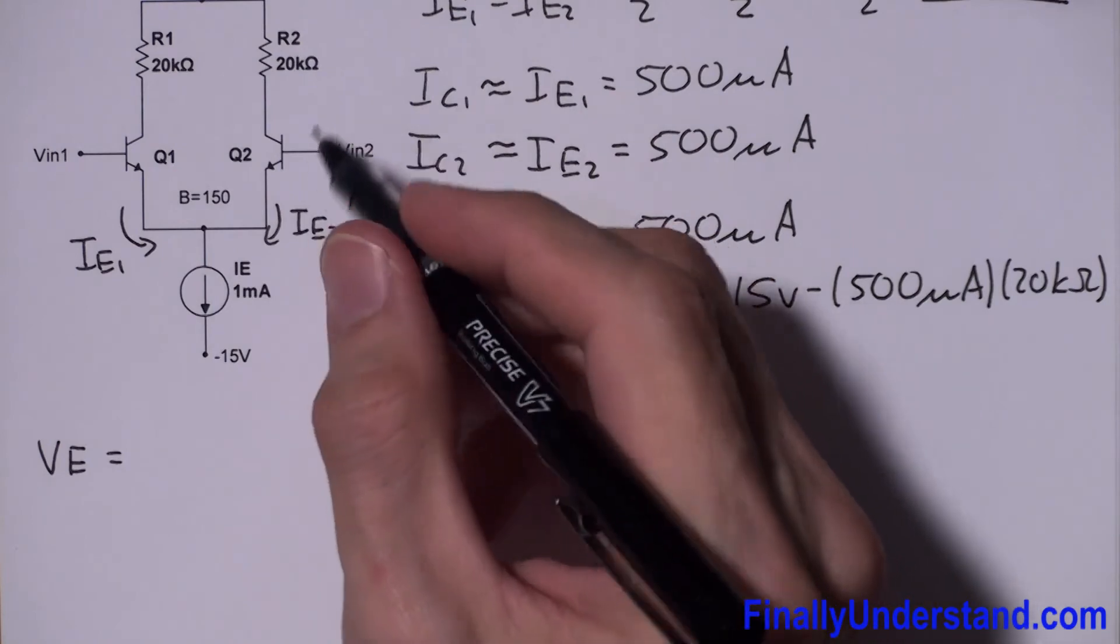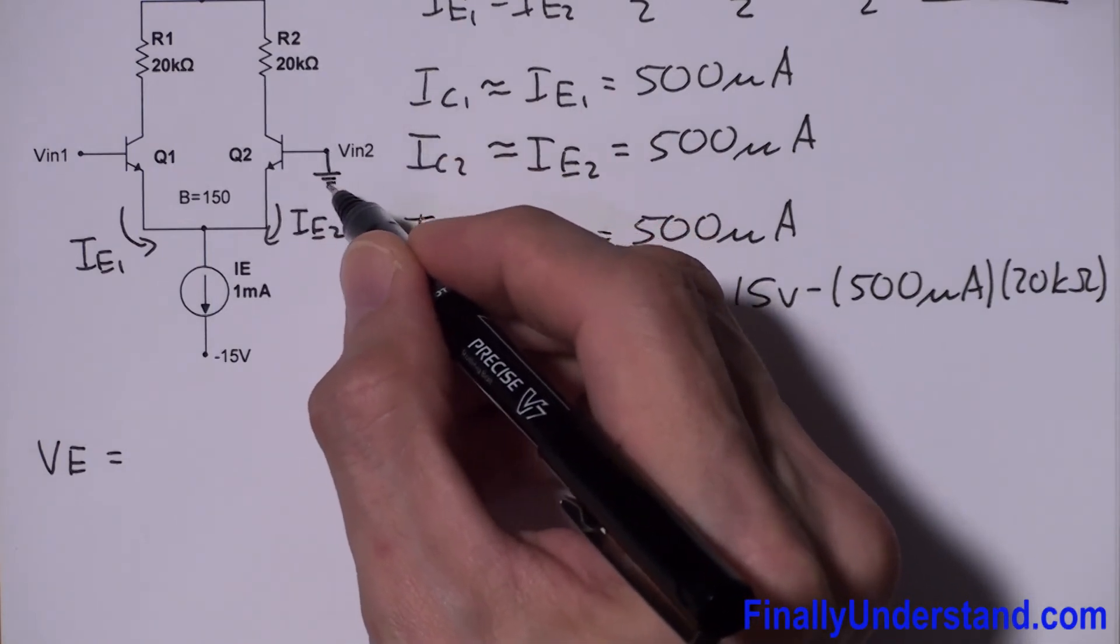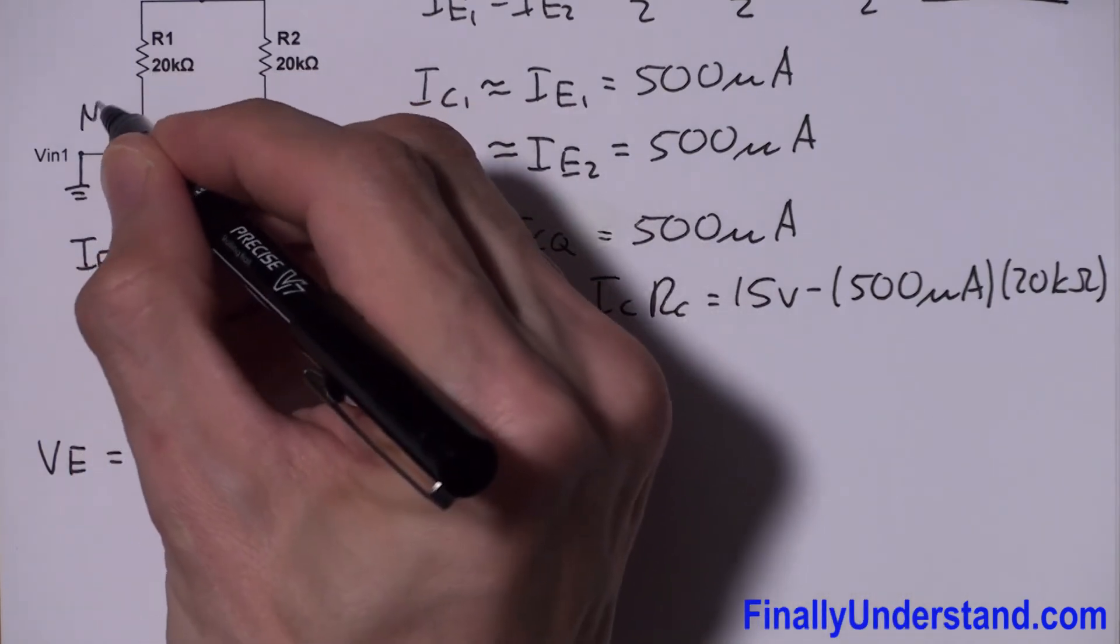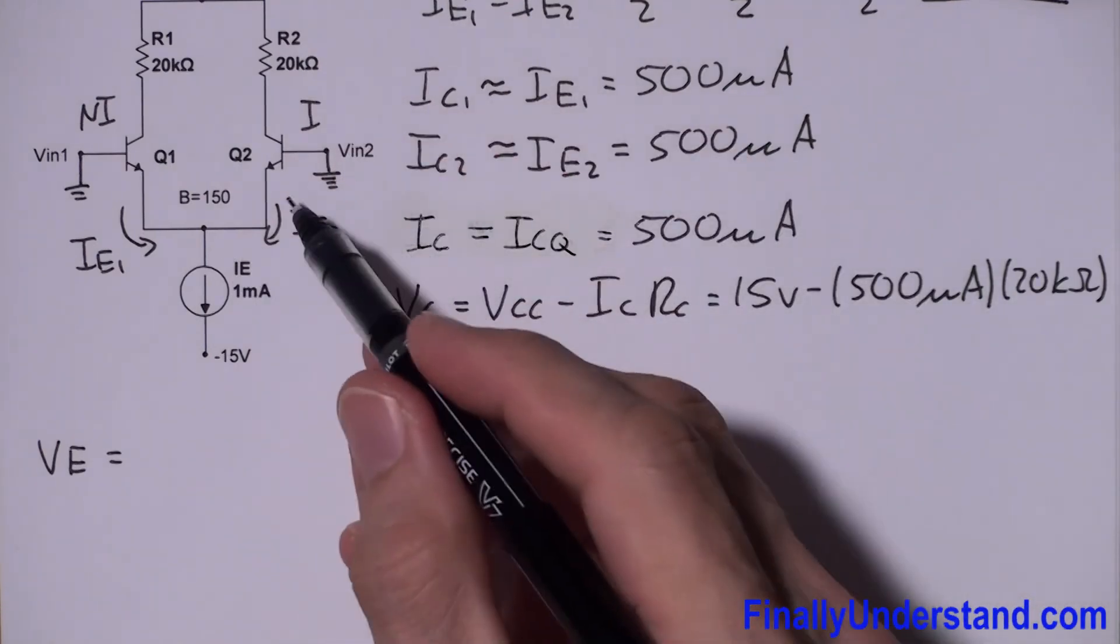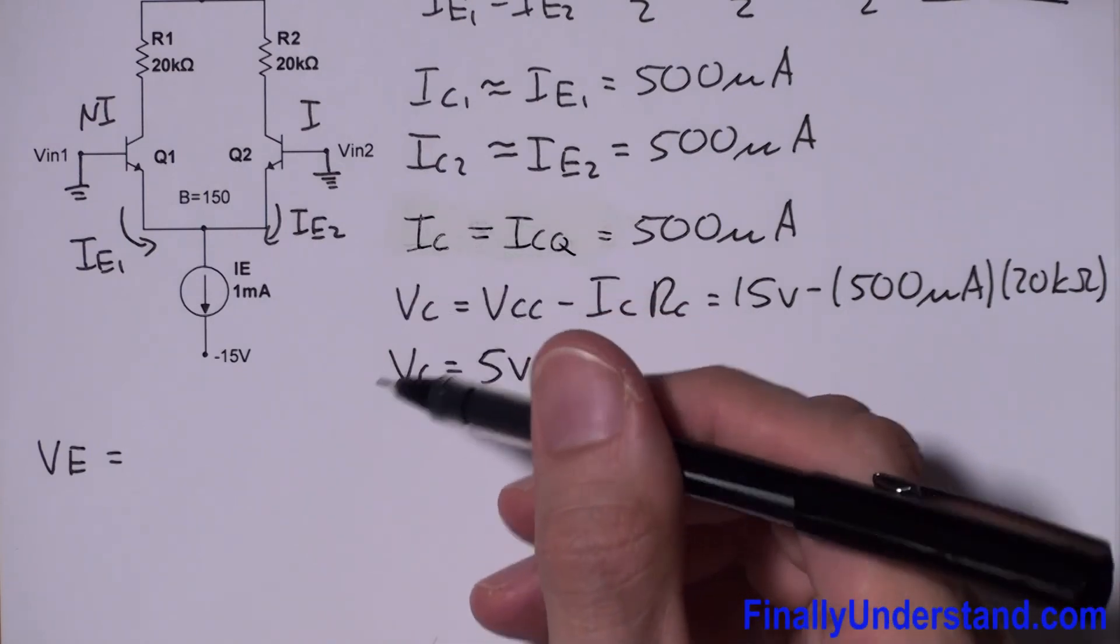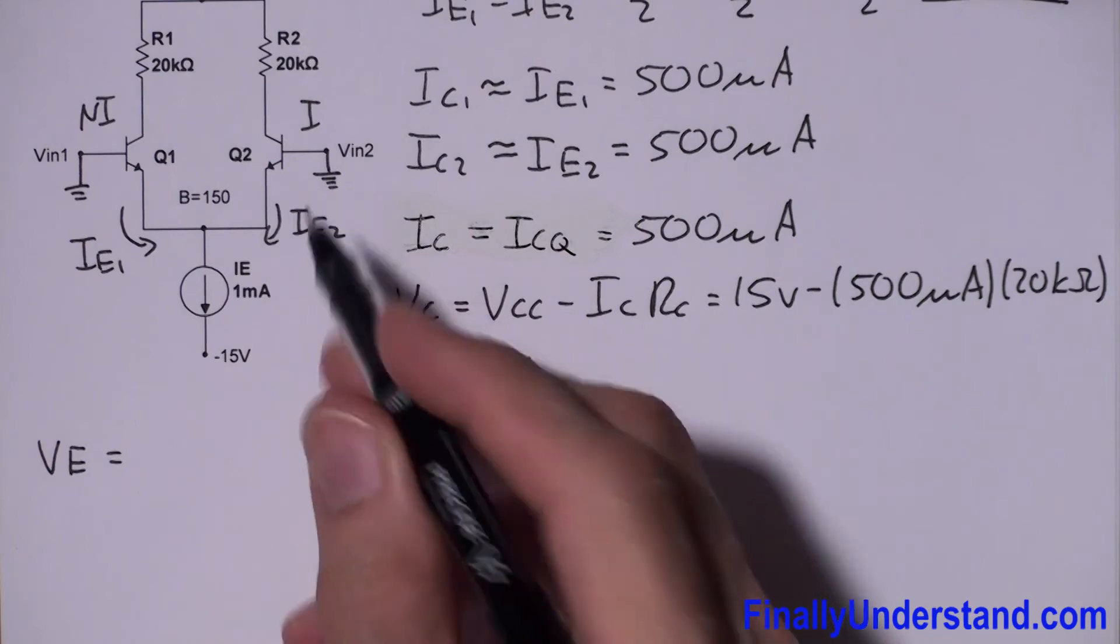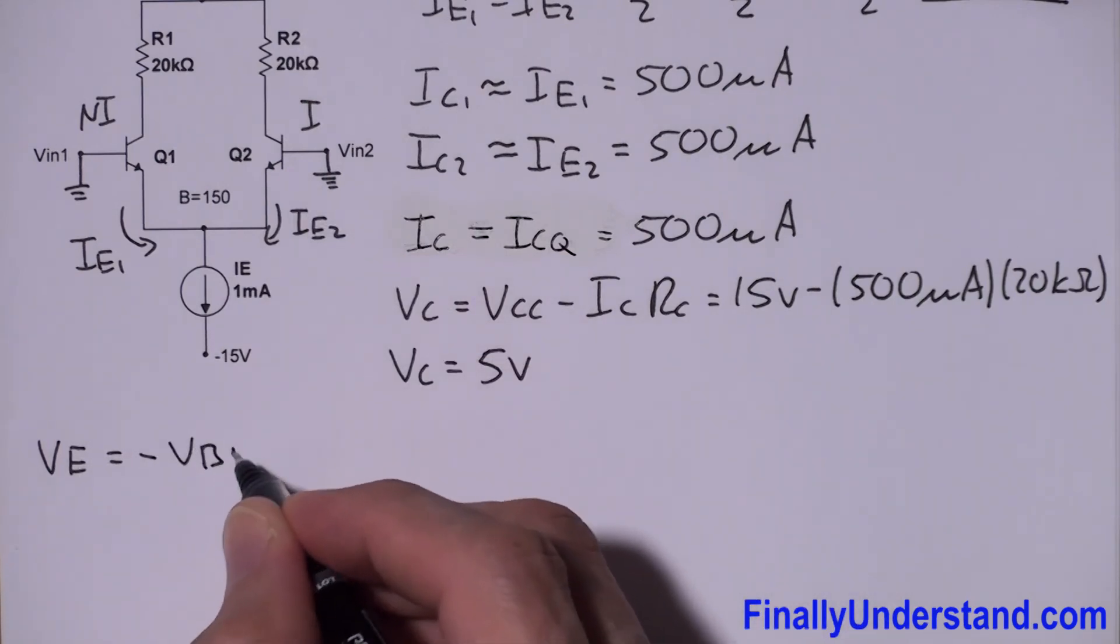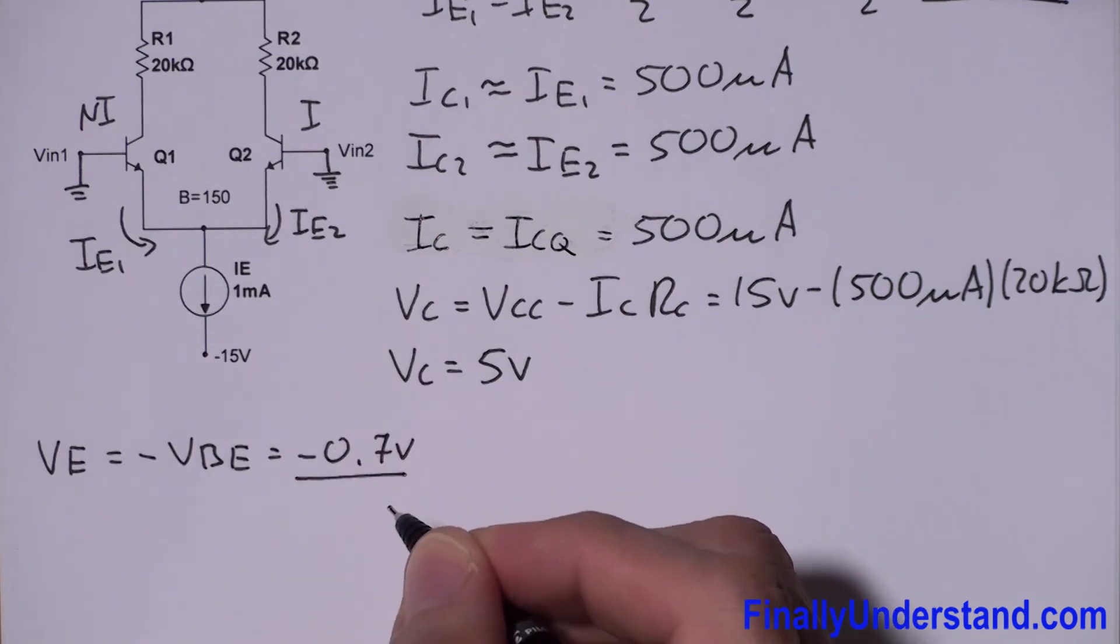Keep in mind that anytime we do the DC analysis, we're supposed to assume that these two inputs, the non-inverting input and inverting input, are connected to ground. If you remember what we did in the previous problems, you'll notice that VE is equal to negative VBE, which equals negative 0.7 volts.